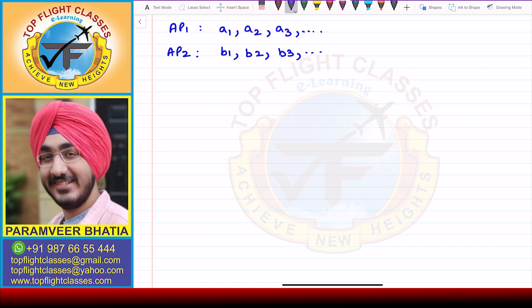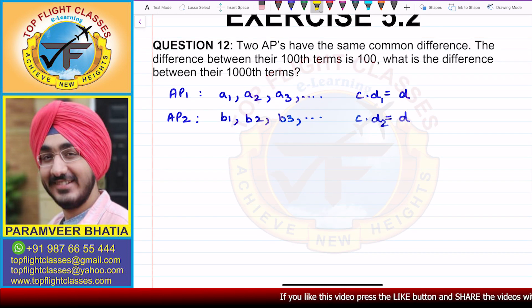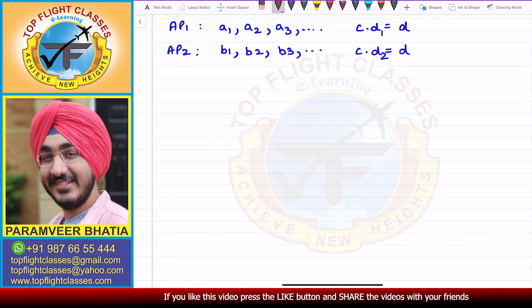So now the common difference of the first AP is small d and the common difference of the second AP is also small d. Why? Because in the question itself, he says that the two APs have the same common difference.